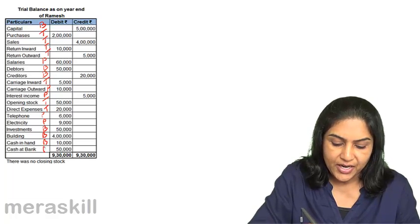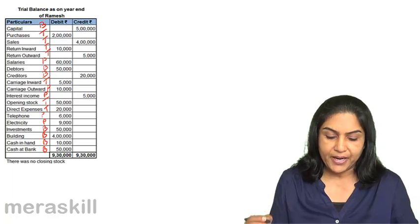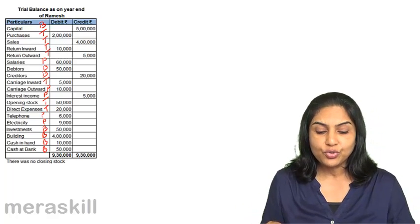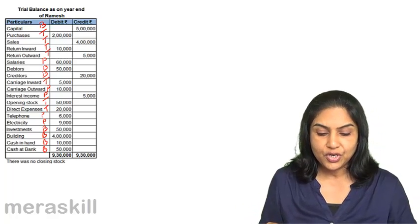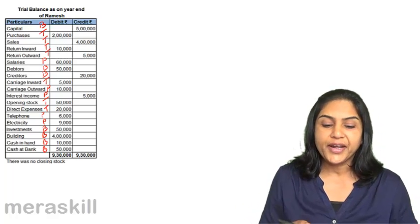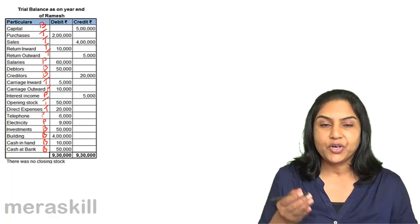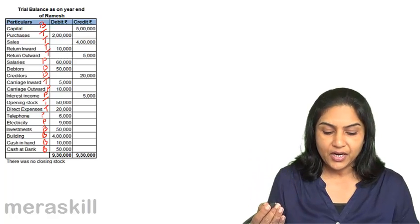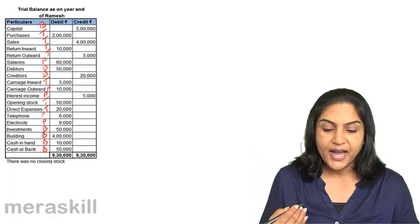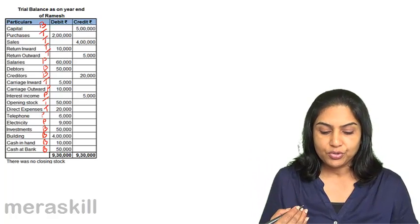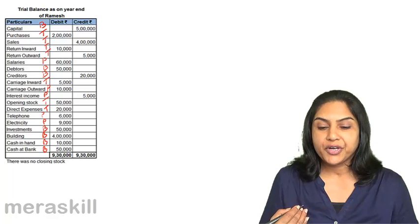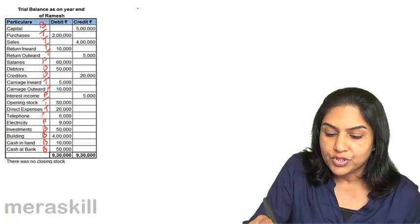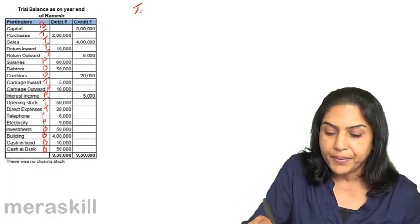We will also be building cash in hand. There was no closing stock. So we have already identified what items go to the trading account and what items go to the profit and loss account. Let us see how this would be prepared.